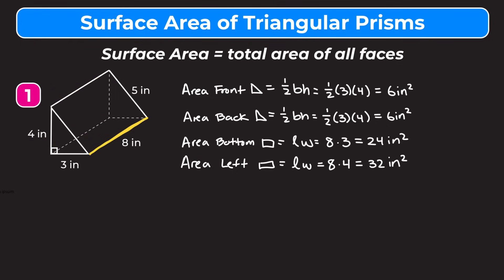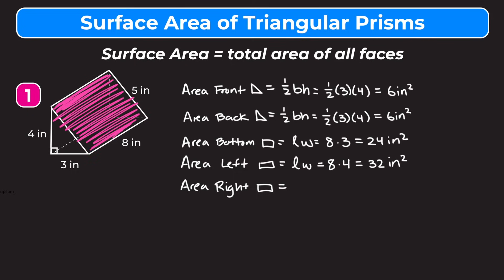Finally, we want to find the area of the right rectangle. I'll shade this rectangle so we know which one we're finding the area of. To find the area of a rectangle it's just length times width. This eight inches is the length and this five inches is the width, so the area is eight times five, which is 40 inches squared.